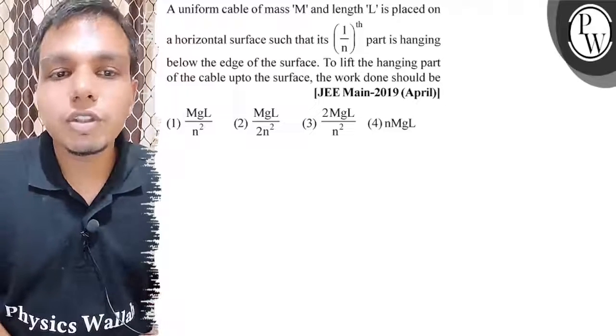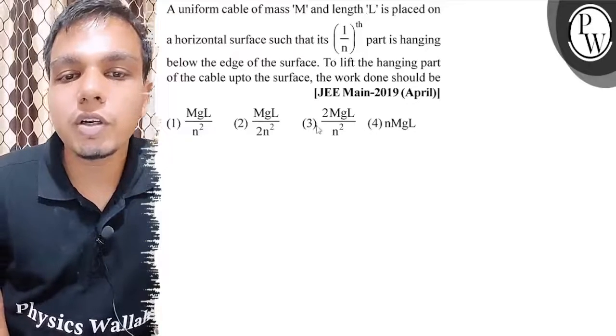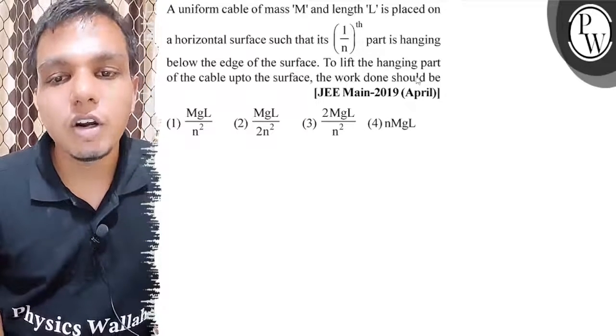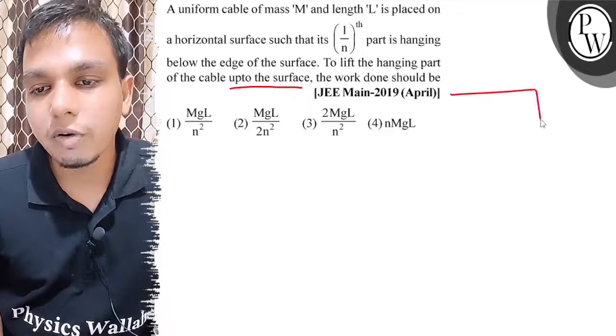Hello children, let's understand the question first. A uniform cable of mass m and length l is placed on a horizontal surface such that its 1/n-th part is hanging below the edge of the surface. To lift the hanging part of the cable up to the surface, the work done should be... So children, draw a diagram.